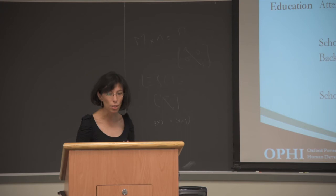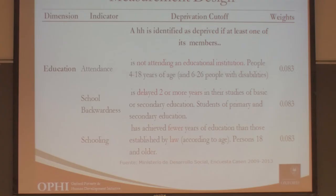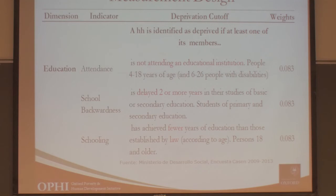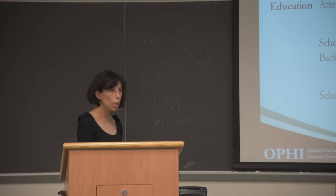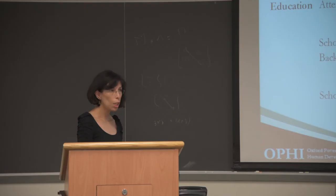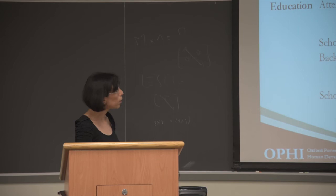Looking at the normative decisions — for each indicator there are two things: the population under study and the deprivation cut-off. For attendance, a household is identified as deprived in education if at least one member aged 4–18 (or 6–26 for people with disabilities) is not attending an educational institution. For school backwardness, the household is deprived if at least one member is delayed by two or more years in primary or secondary education. For schooling, the targeted population is people aged 18 and older. Each indicator applies to a different sub-population.